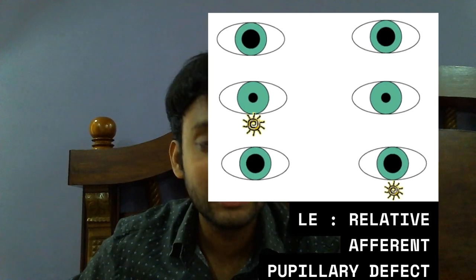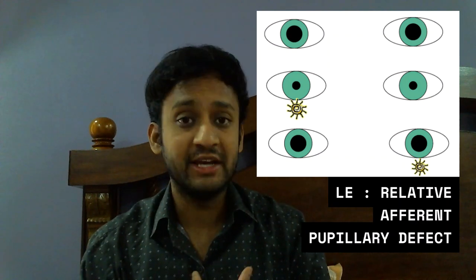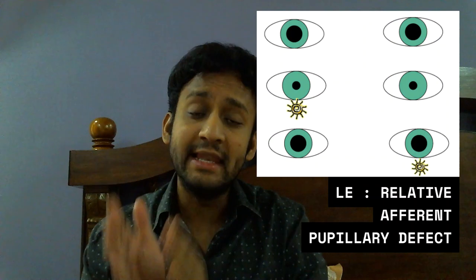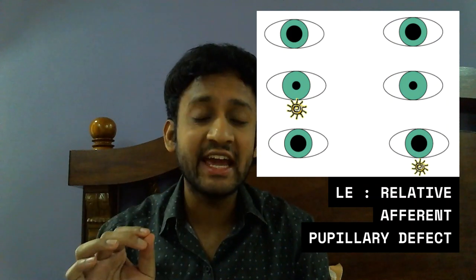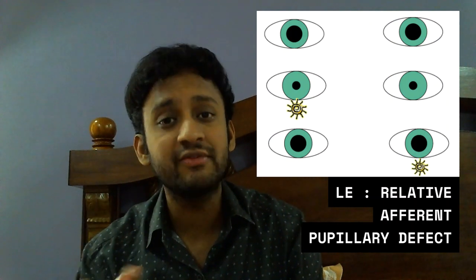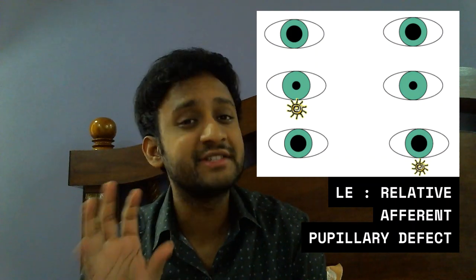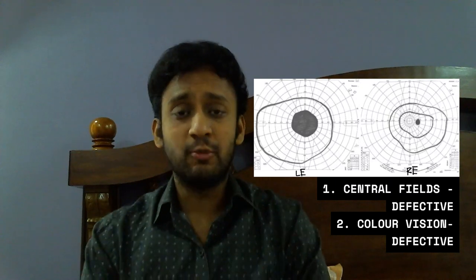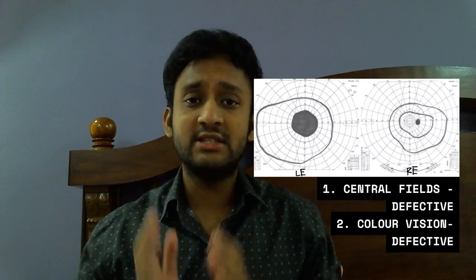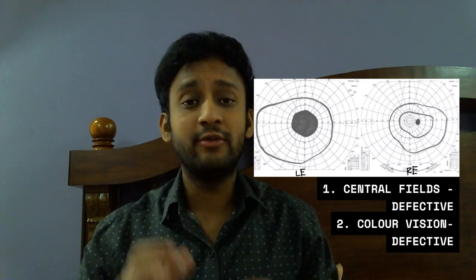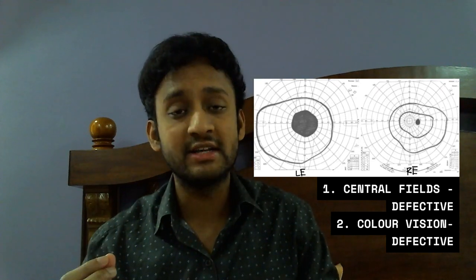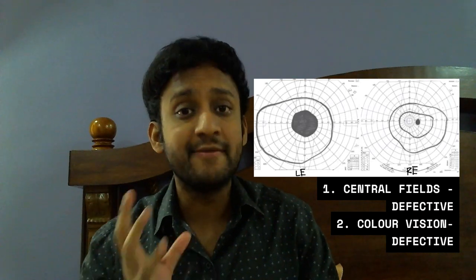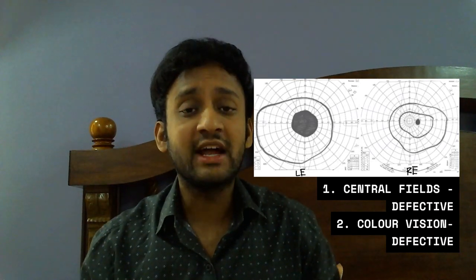The patient has a left eye RAPD, which indicates the optic nerve is not functioning well. Now, this is the most important point: whenever we see a patient with RAPD, even before we dilate the patient and look at the fundus, I order two important investigations — one is color vision, and the second is a field assessment.